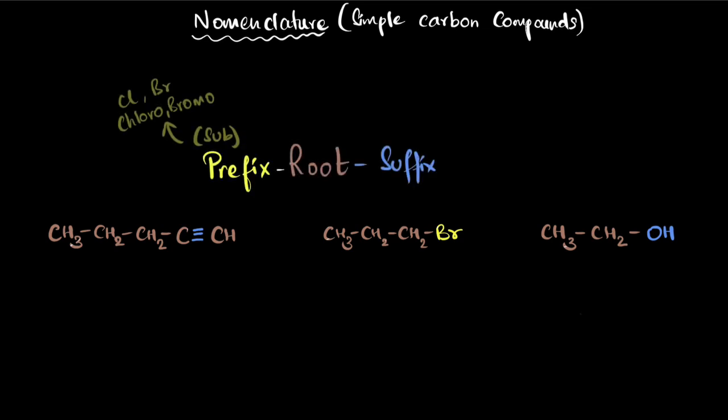The prefix is the substitution group. In most simple carbon compounds, the substitution group substituents are the halogens. For chlorine, we will use the word chloro. For bromine, bromo. It could be iodo, fluoro. So that's how you begin.